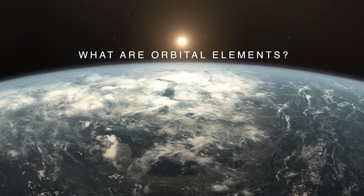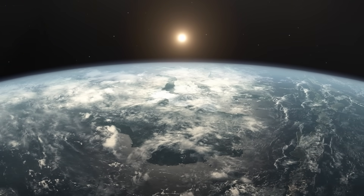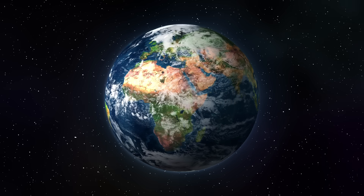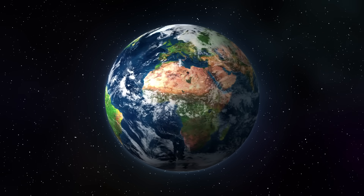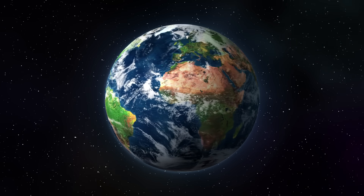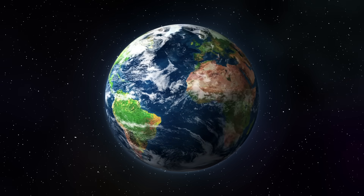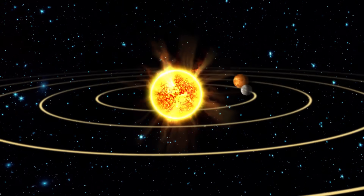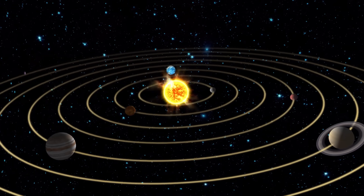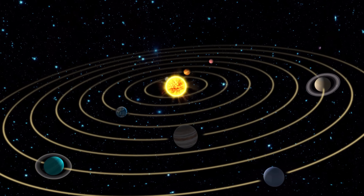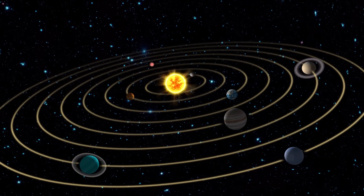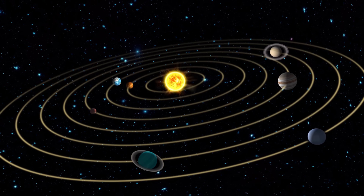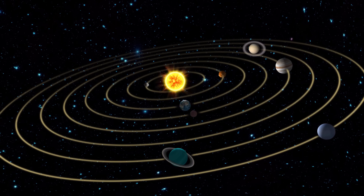What are orbital elements? To better understand the Milankovitch cycles, we must first understand what orbital elements are. Orbital elements are parameters that describe the shape and orientation of the orbit of one celestial body around another, such as a planet around the Sun. These elements determine how the distance and inclination of the body in its orbit varies, affecting the amount and distribution of solar energy it receives. In astronomy, a celestial body can have up to seven orbital elements. However, to understand the Milankovitch cycles, it is enough to understand mainly three.